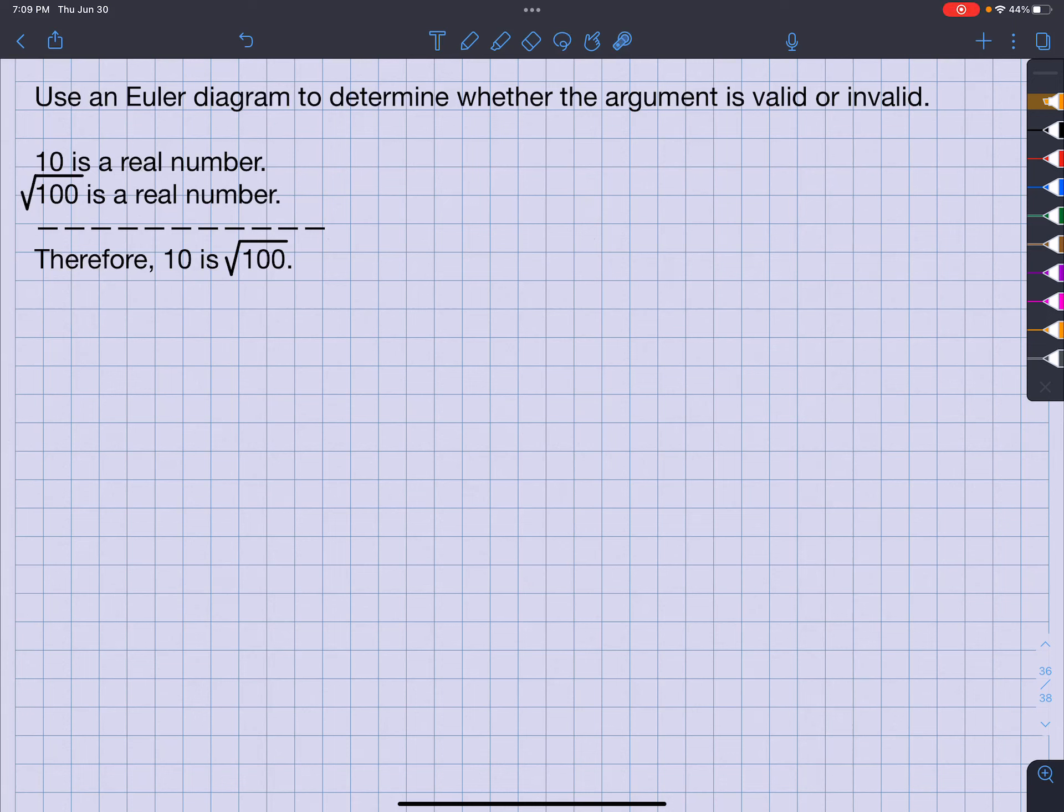What's up? It's your man, Jimmy Chan. All right, so we have to use the Euler diagram to determine if this argument is valid or invalid.